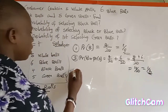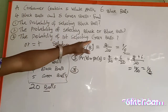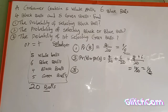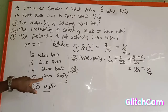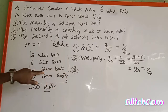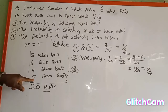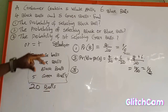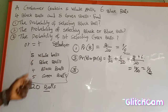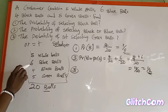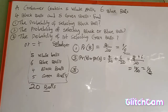For number three, the probability of not selecting green balls — we have five green balls. Not selecting green means we select only white, blue, and black balls. White is five, blue is six, and black is four. So four plus six equals ten, and ten plus five equals fifteen. We have fifteen non-green balls out of twenty.